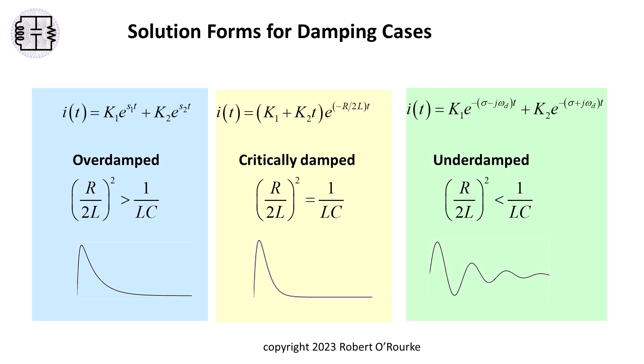The different cases of damping also influence the final form of the solution equation. In the overdamped case, the solution has two real roots that are unequal. Both terms in the solution equation are decaying exponentials.